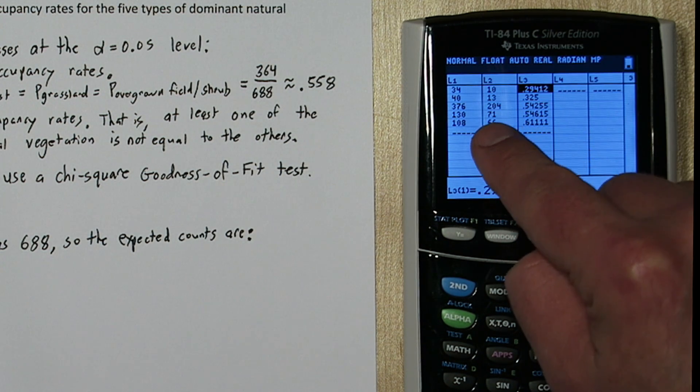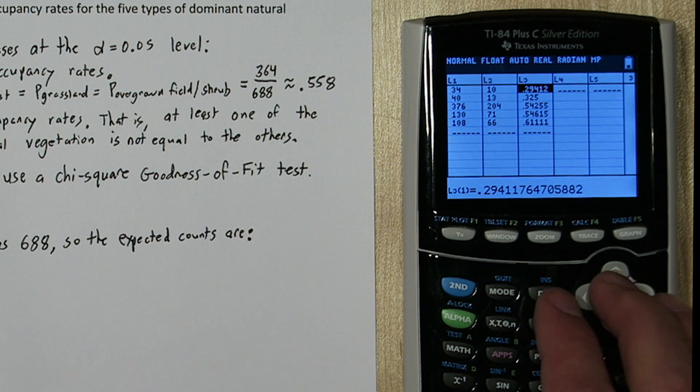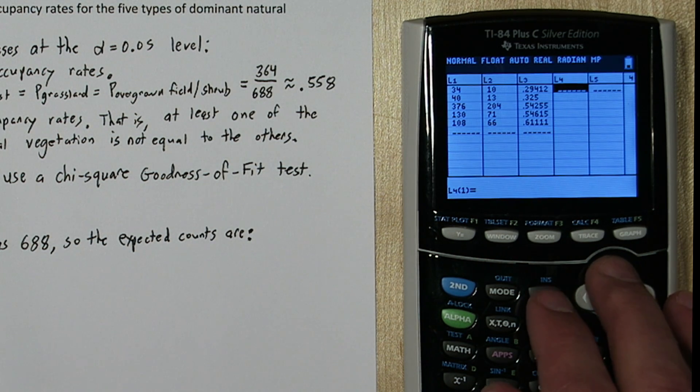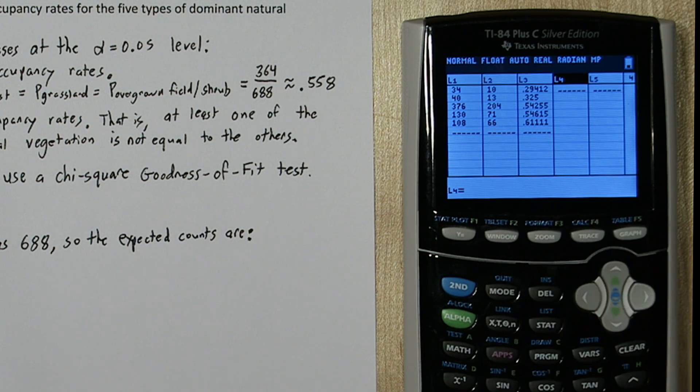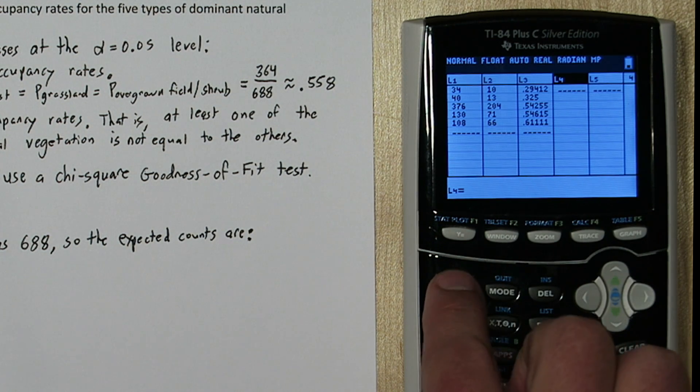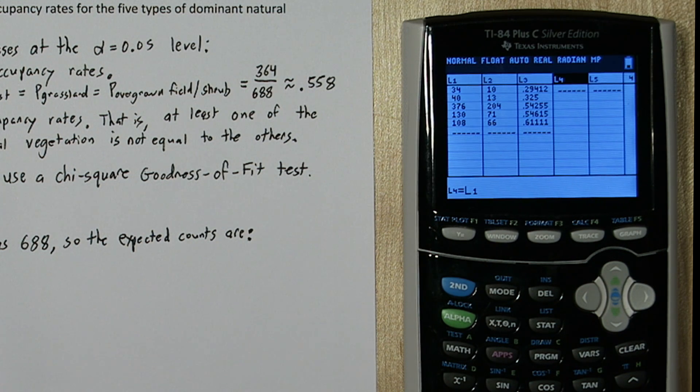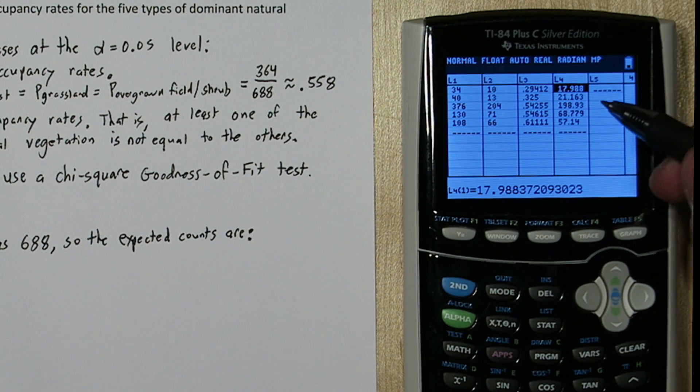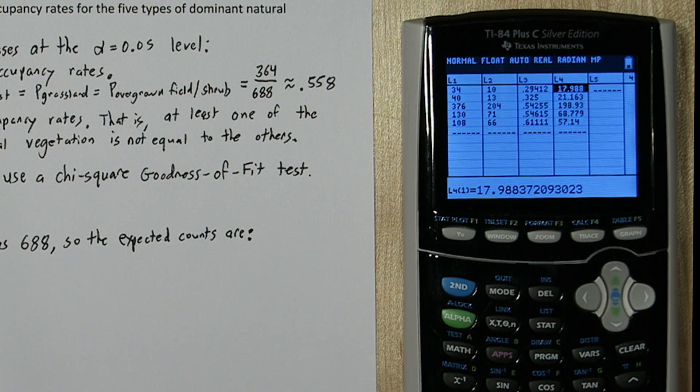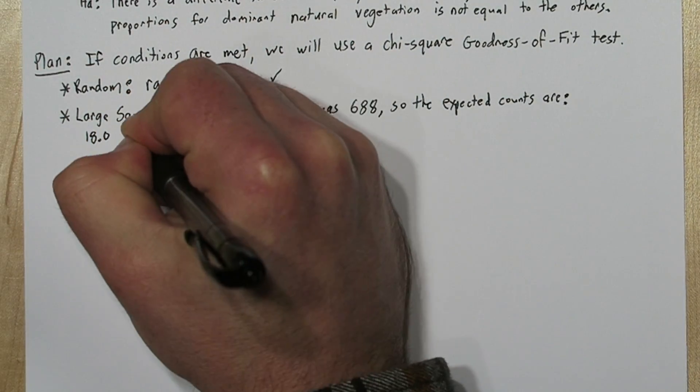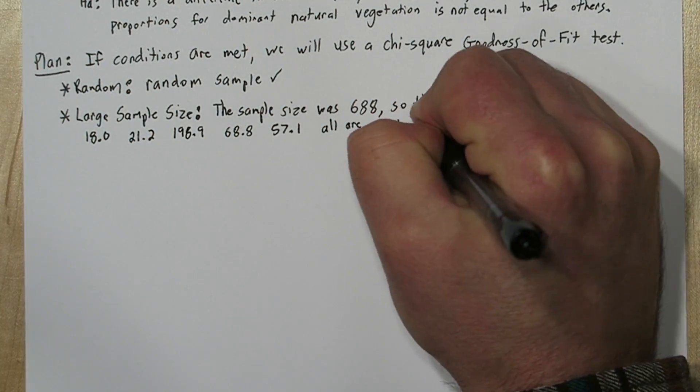In list one is the total number of houses for each of these dominant natural vegetations. I'm going to go over to list four and push up. This is our function bar. We're going to take list one, so I'll press second one, and multiply it by the occupancy rate we found, which was 364 divided by 688, the average occupancy rate. So here are expected occupancy rates for each of these dominant natural vegetations. Let's write those down. The good news is all are greater than five, so our sample is large enough.